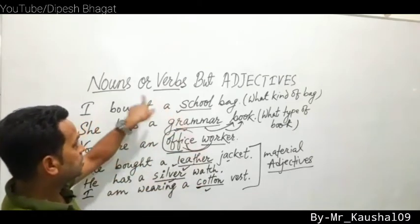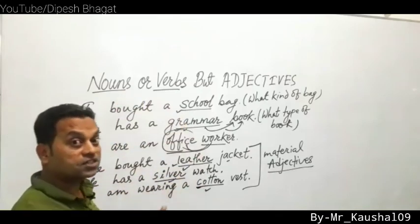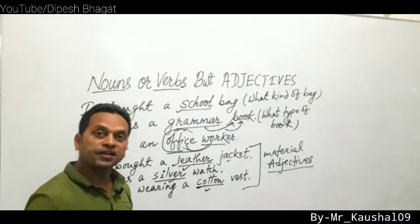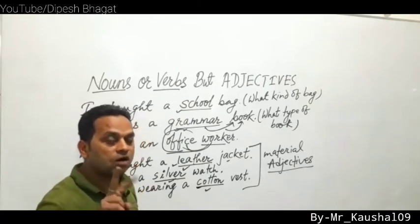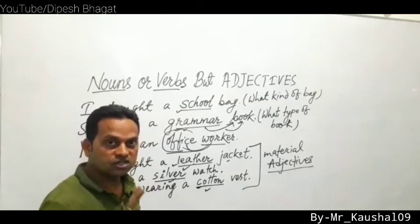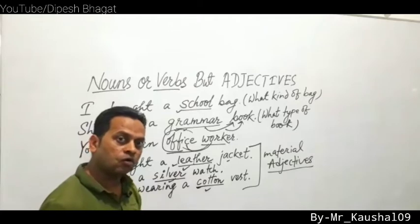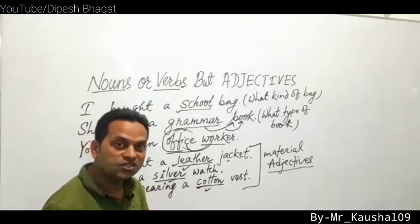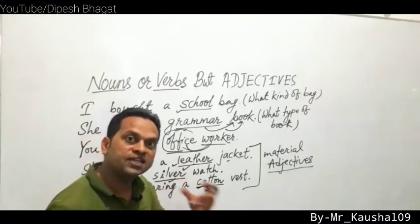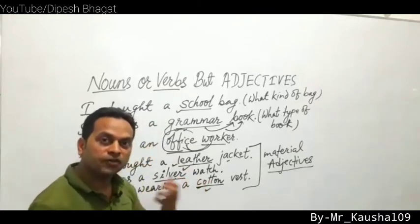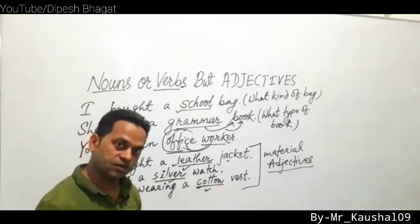So nouns can also play the role of adjectives. When two nouns come together, and the first noun describes the second — showing material, type, or purpose — the first noun is acting as an adjective.